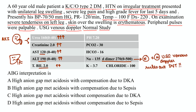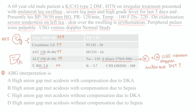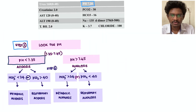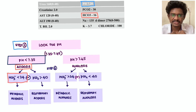The options are: high anion gap metabolic acidosis with compensation due to DKA; with compensation due to sepsis; without compensation due to DKA; or without compensation due to sepsis. Let's approach systematically. First, look at the pH — it is 7.20, which is less than 7.35, so acidosis.